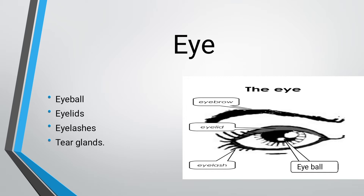The function of the eyelid is that it covers our eyes. Next are the eyelashes. The function of eyelashes is that they protect our eyes from dust particles. Next are the tear glands.